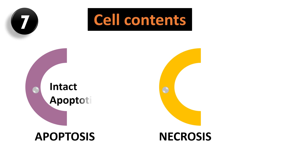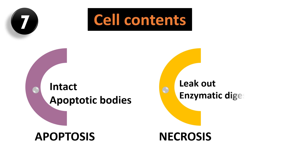As the plasma membrane is intact in apoptosis, cellular content does not leak out — it is released into smaller apoptotic bodies. While in necrosis there is leaking out of cellular content, which is then digested by lysosomal enzymes of the cell itself or from leukocytes.